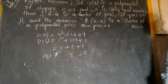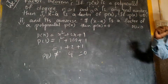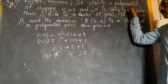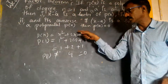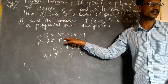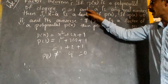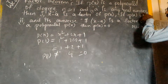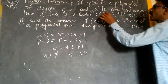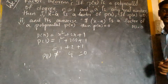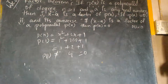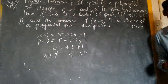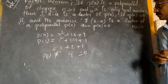So p of 1 is not equal to 0. Again, p of x is a polynomial of degree greater than 1. Here I would like to take a as any real number, but here I would like to take minus 1. My real number is minus 1.